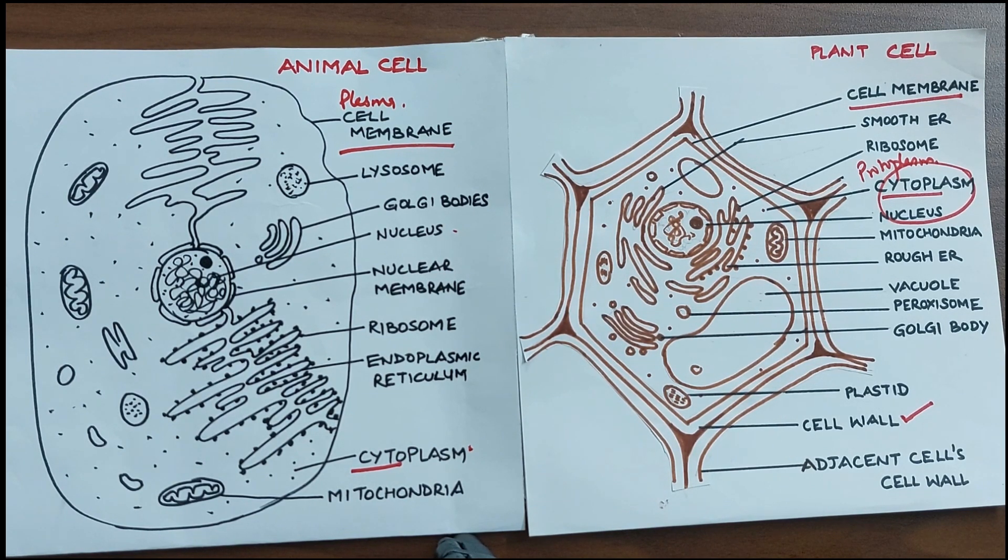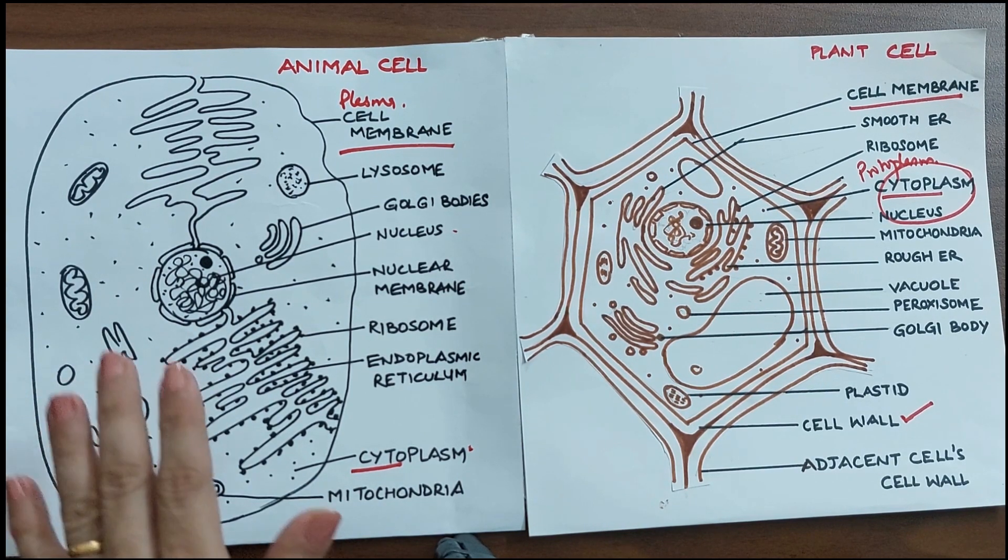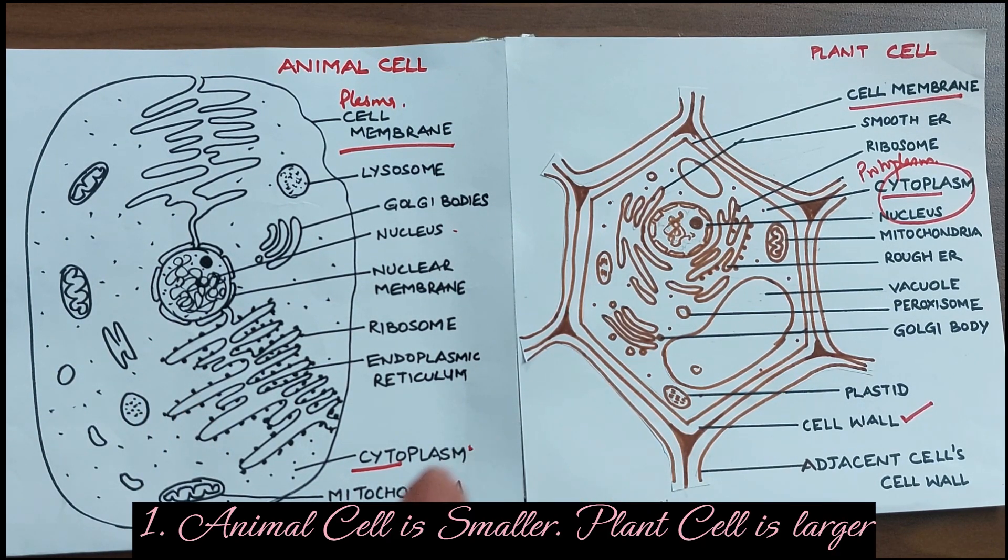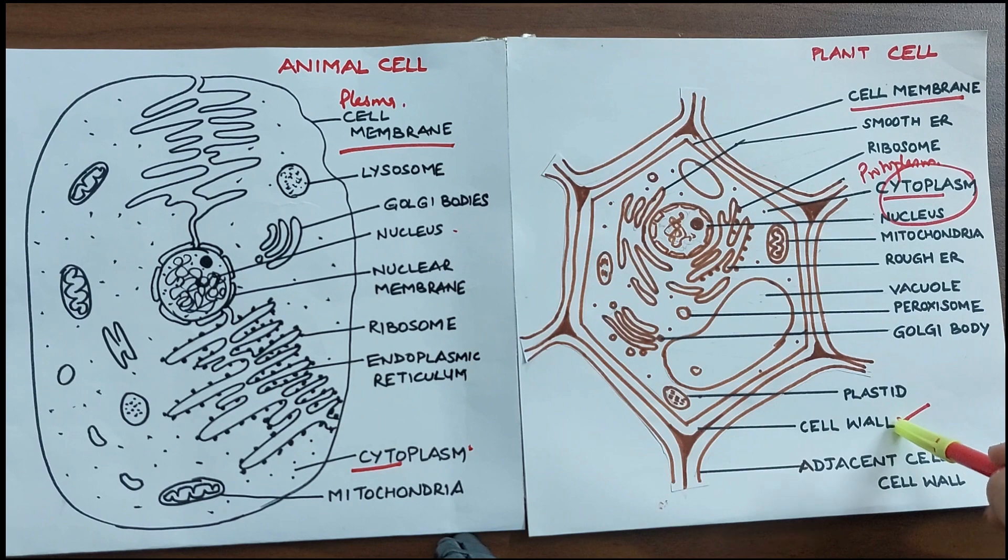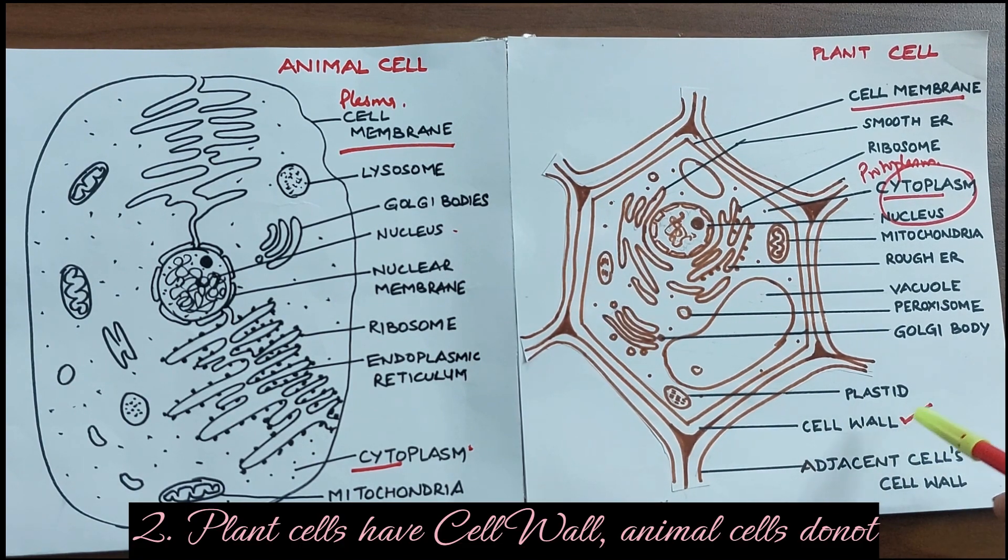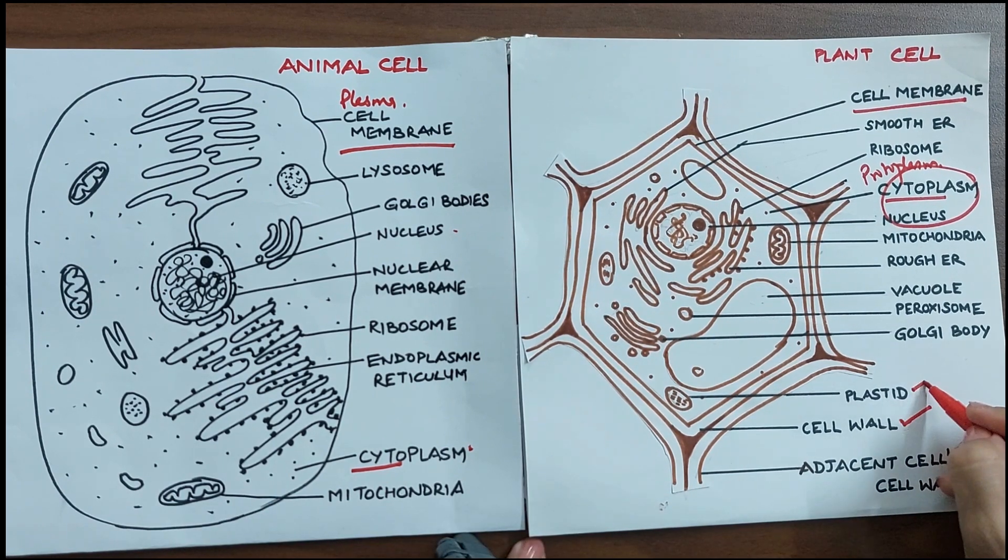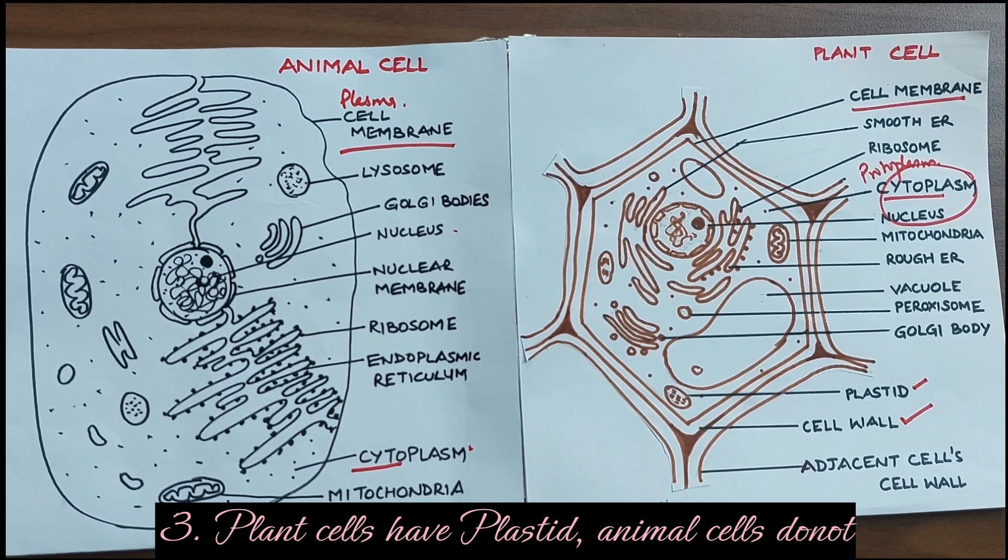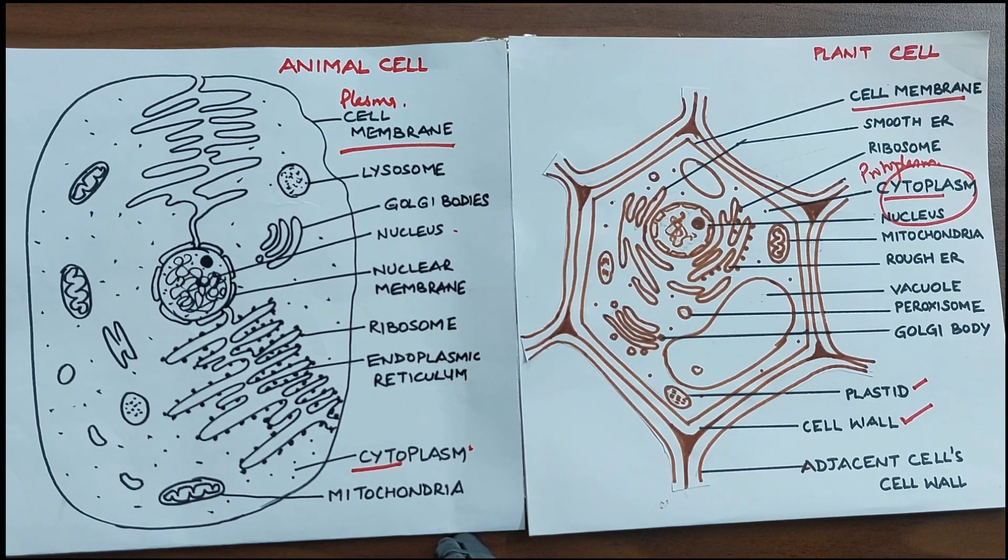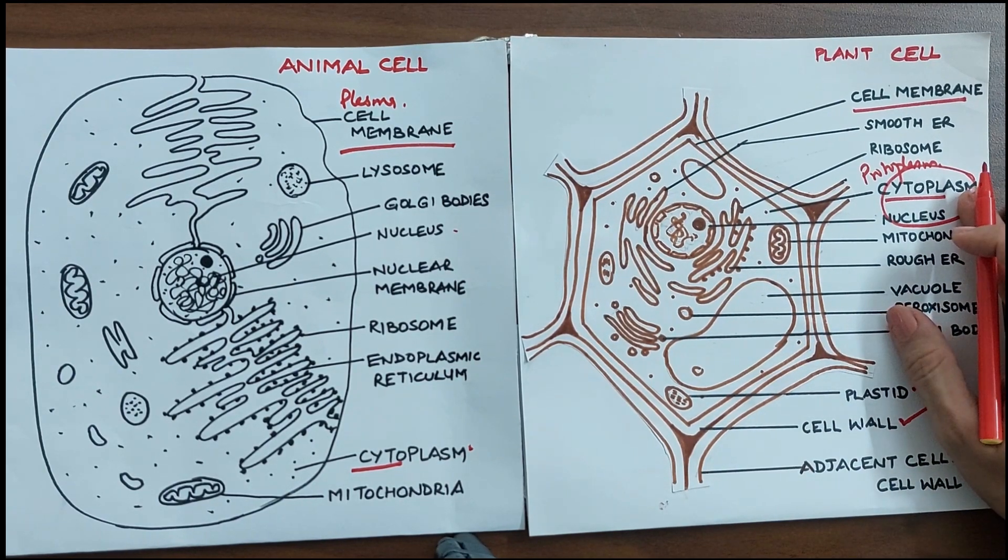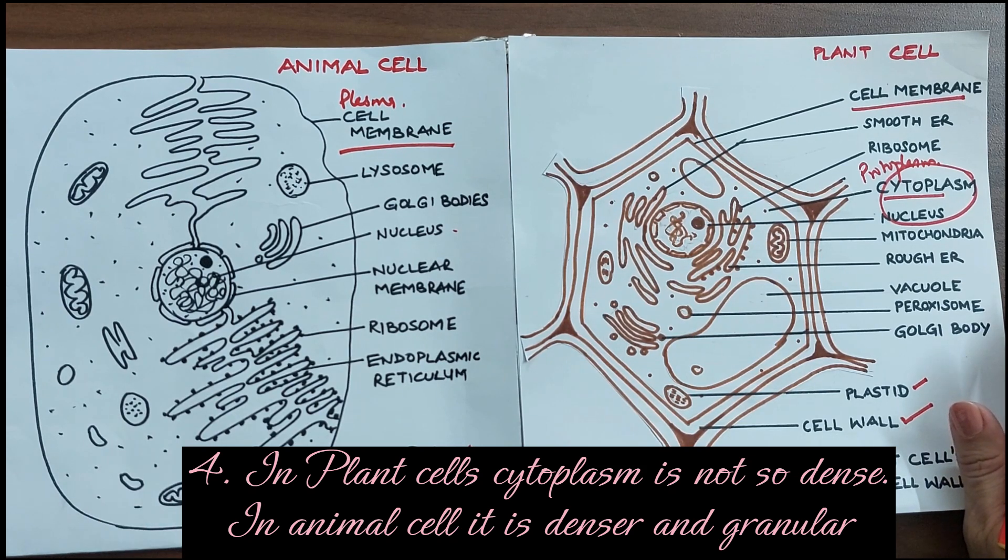If you have to identify certain differences between plant and animal cells, we find that animal cells generally are smaller in size as compared to plant cells. Plant cells are larger. We already saw plant cells have an additional structure outside the cell membrane called the cell wall. There is another organelle called the plastid which is found in the plant cells. This organelle contains pigments in the plant cells and is absent in case of animal cells. In the plant cells the cytoplasm is not so dense, whereas in the animal cell the cytoplasm is pretty dense and more granular.